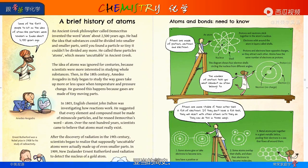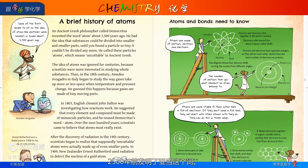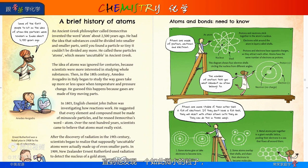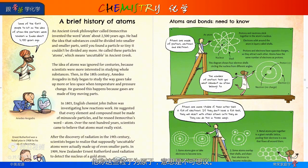A brief history of atoms. An ancient Greek philosopher called Democritus invented the word atom about 2500 years ago. He had the idea that substances could be divided into smaller and smaller parts until he found a particle so tiny it couldn't be divided anymore. He called these particles atoms, which means uncuttable in ancient Greek.